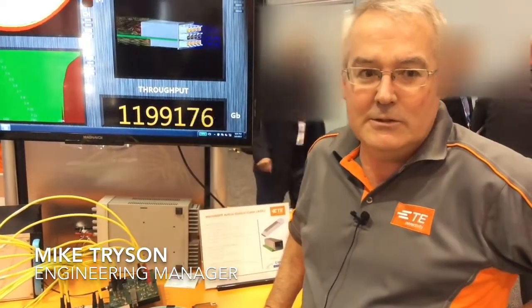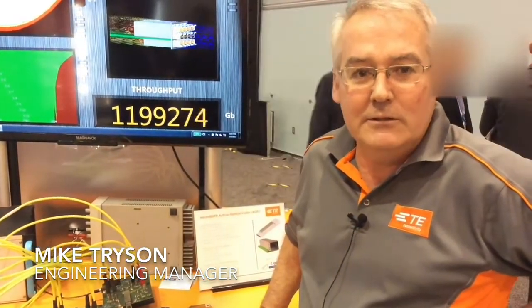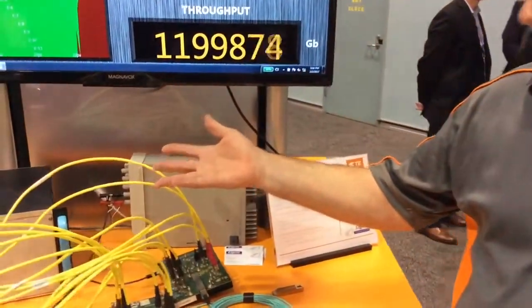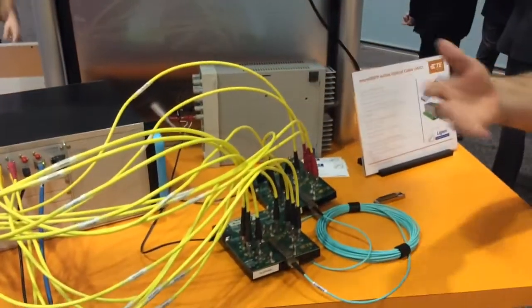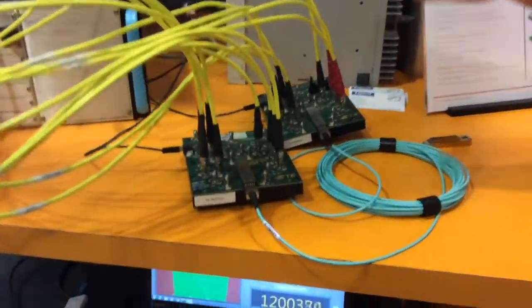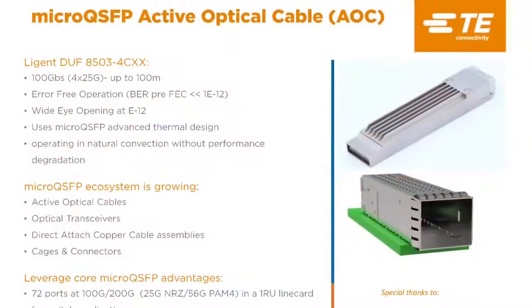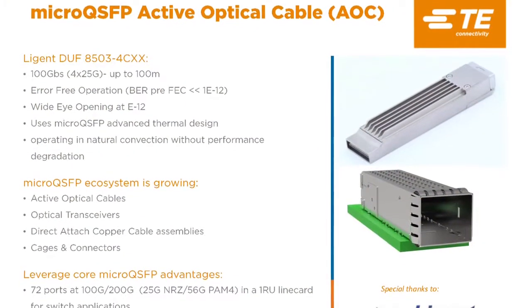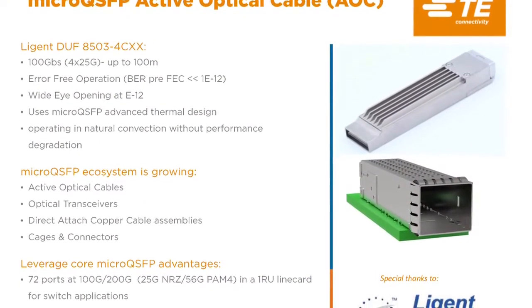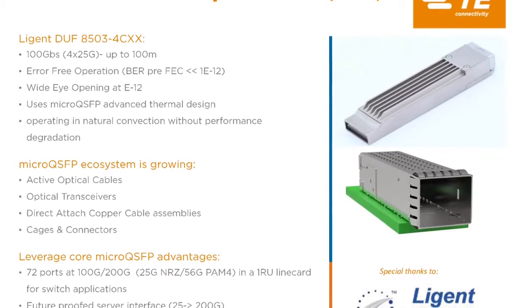What we're showing here and demonstrating today is the evolving micro QSFP ecosystem. What we have is a 100 gig micro QSFP from a partner vendor who's developed an active optical cable. The 100 gigs from a multi-channel BERT into the micro QSFP through 10 meters of cable back to the BERT.